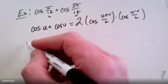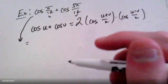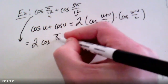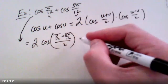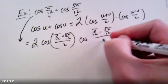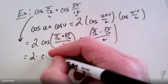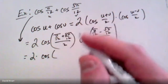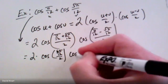So cosine(π/12) + cosine(5π/12) equals 2·cos((π/12 + 5π/12)/2)·cos((π/12 − 5π/12)/2). We need to clean this up: adding the numerators gives 6π/12 over 2 for the first argument, and π/12 − 5π/12 gives −4π/12 over 2 for the second argument.